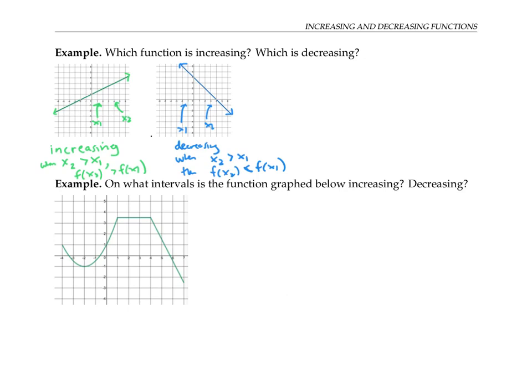The second example gives the graph of a function that's increasing in some places but decreasing in others. This part of the graph, the function is decreasing, because as the x values increase from left to right, the y values go down.